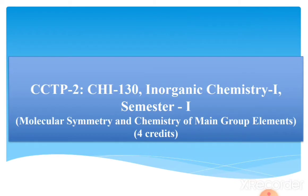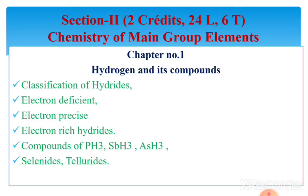The name of our paper is CHI 130, Inorganic Chemistry 1st, Semester 1st — Molecular Symmetry and Chemistry of Main Group Elements, with a total of 4 credits. We are discussing Section 2, which has 2 credits and 24 lectures. The name of Section 2 is Chemistry of Main Group Elements, and we start with chapter number 1: Hydrogen and its Compounds.